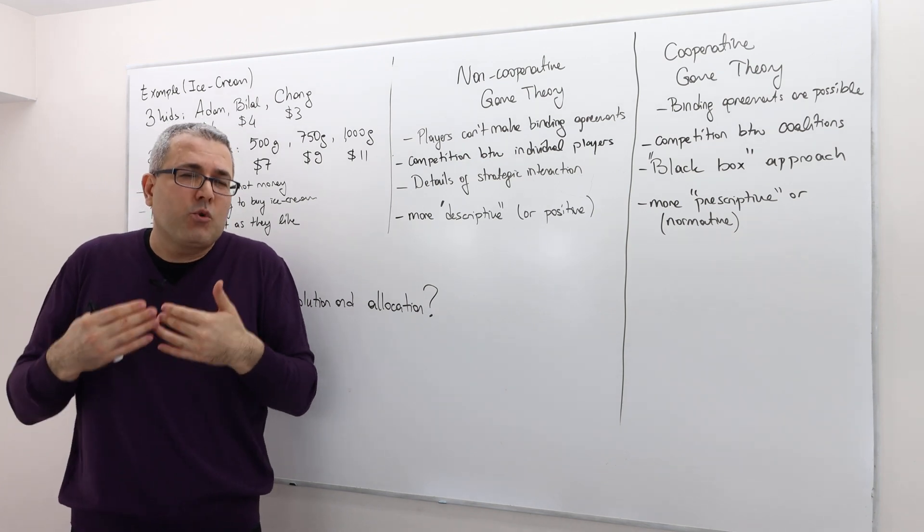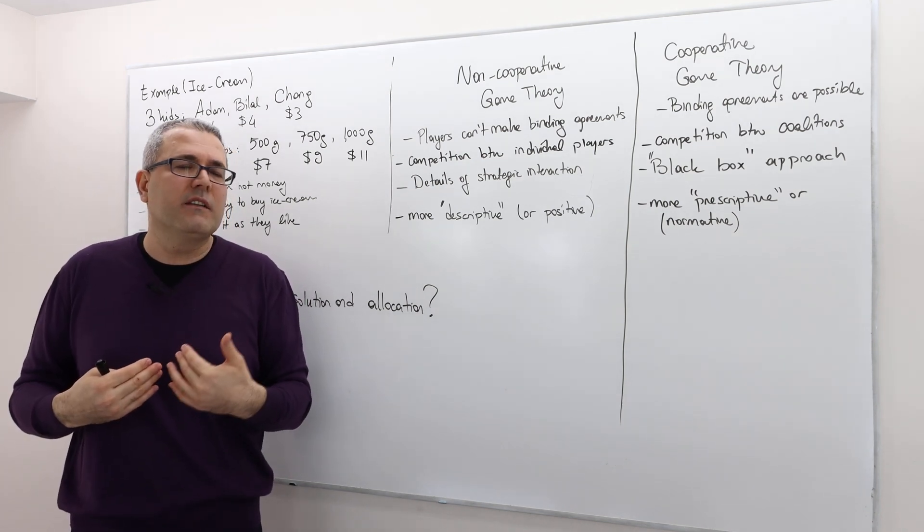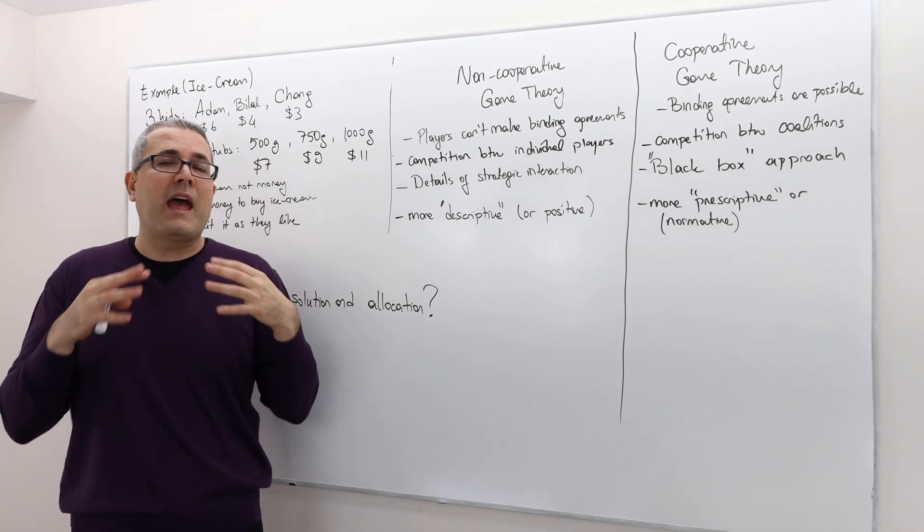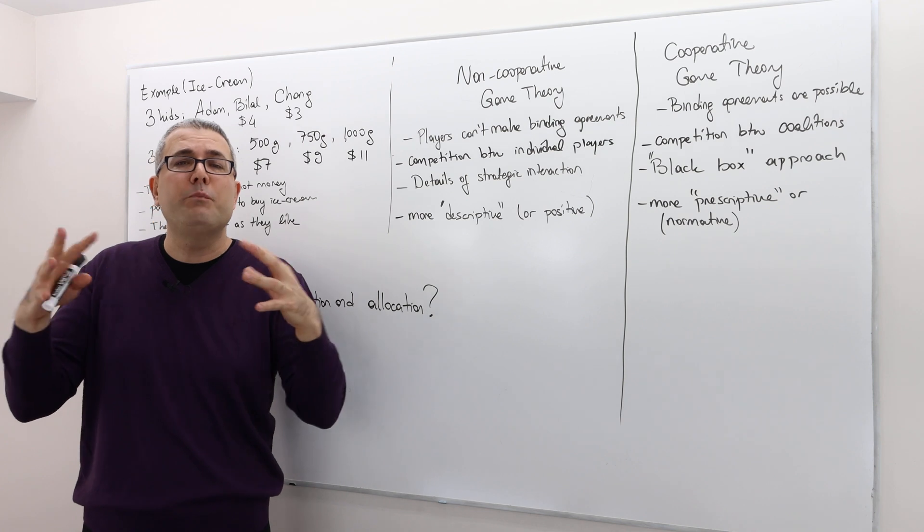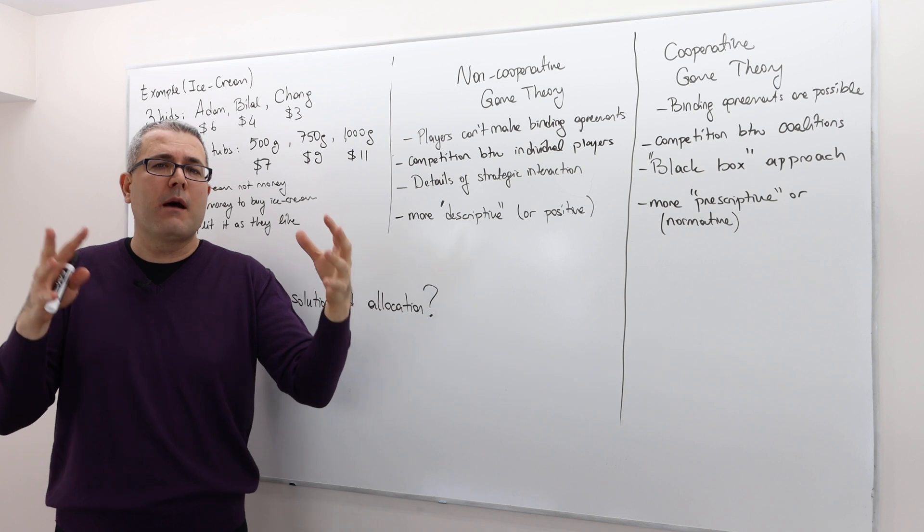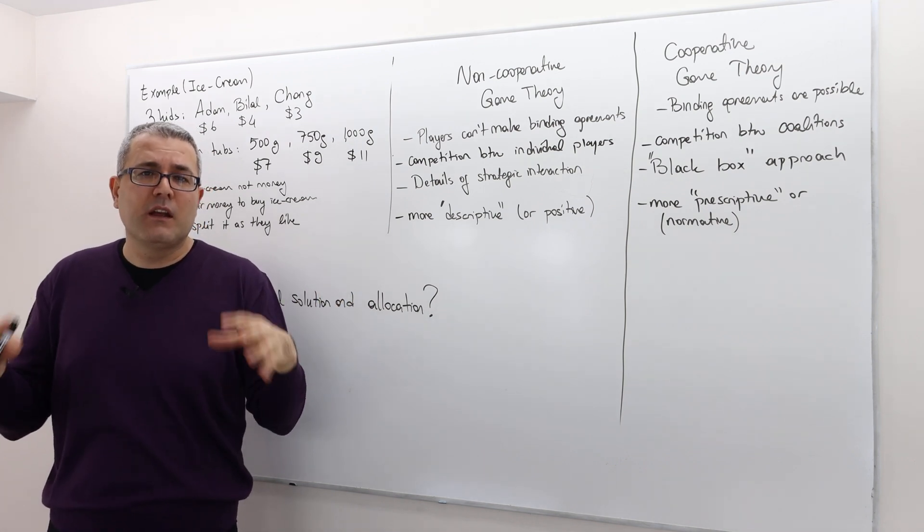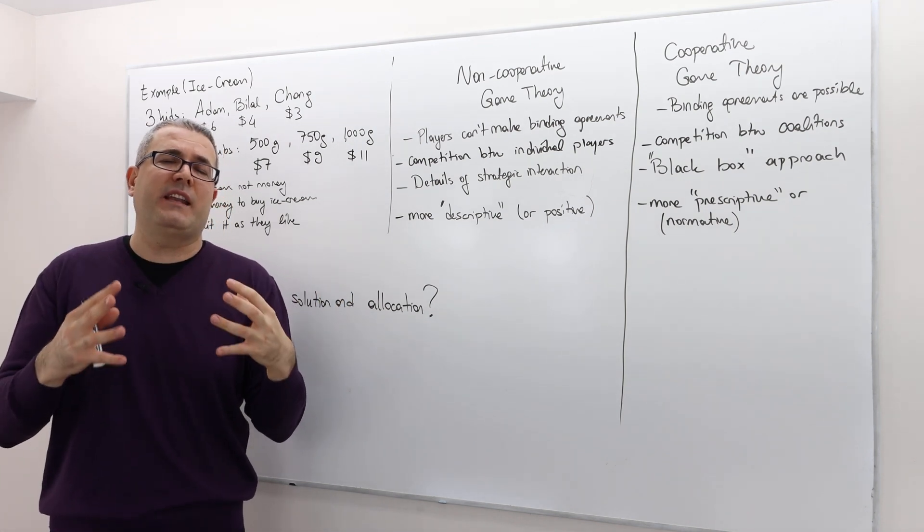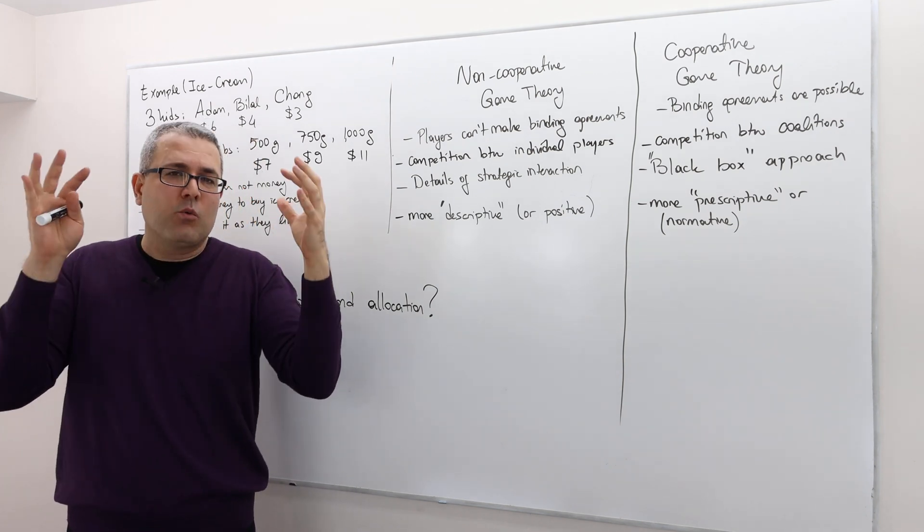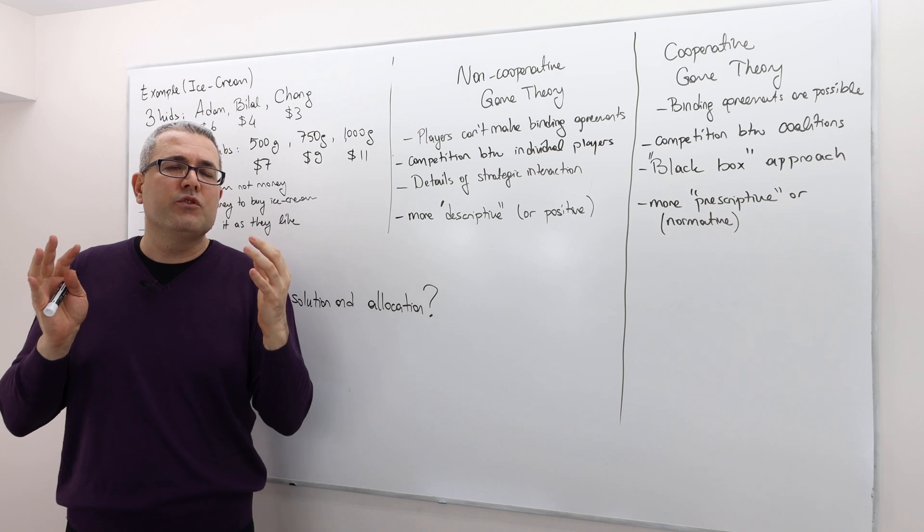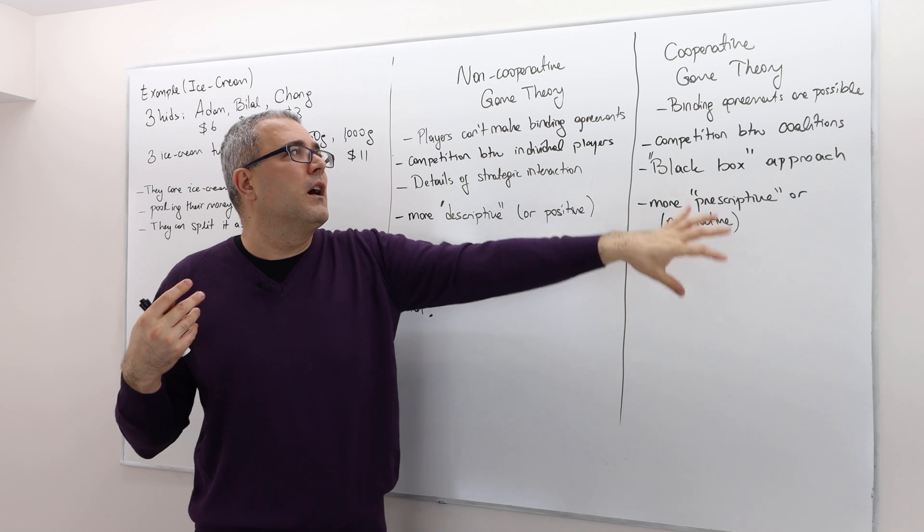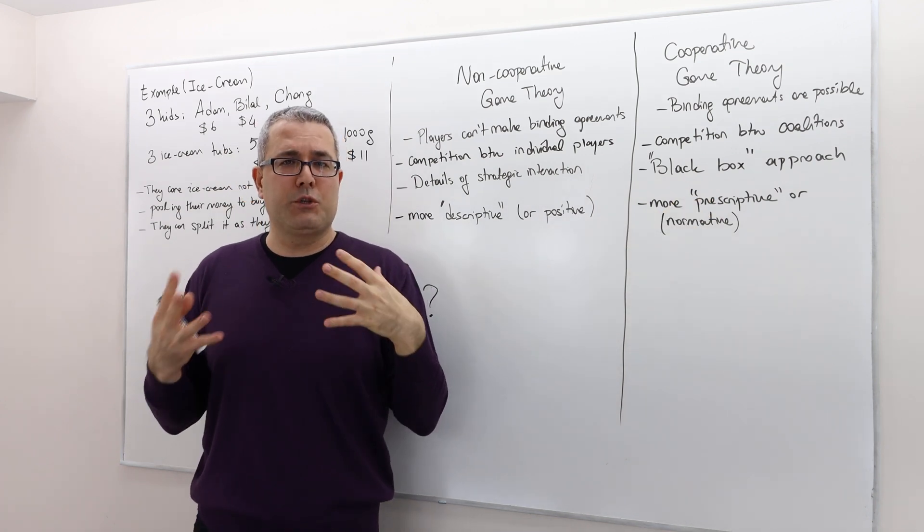That depends on the questions you want to tackle. So if you don't really care about the specifics of the game and only care about what should be the outcome. I mean, eventually, they're going to go to the store, buy the ice cream and split it. The question is, what is that outcome? What is this optimal outcome? So you don't really care what's going on in the black box. You just look at the outcome of this black box. So for that reason, cooperative game theory makes much more sense.